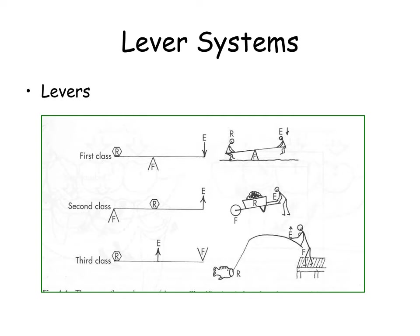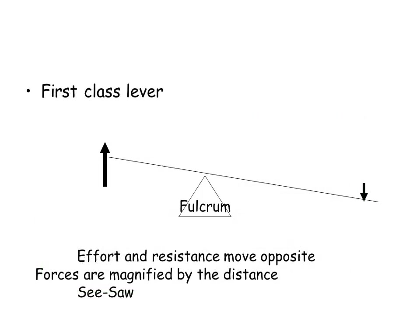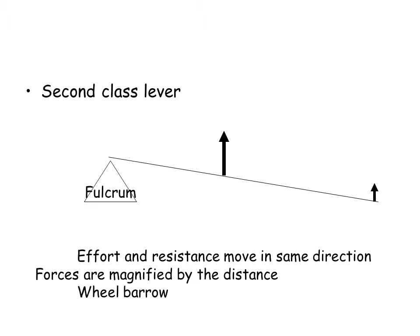The third class lever is not commonly found in RPD. The first class lever is exemplified by the seesaw. Levers are used to magnify forces across the fulcrum, and the effort and resistance move opposite each other. The second class lever is exemplified by a wheelbarrow, where the effort and resistance move in the same direction.